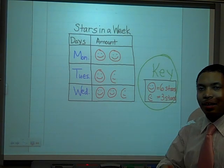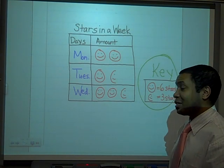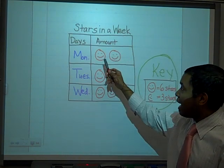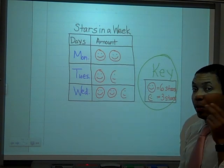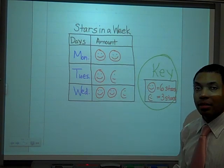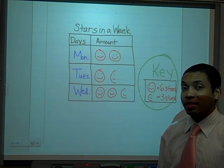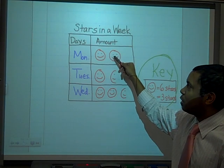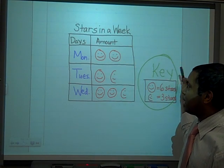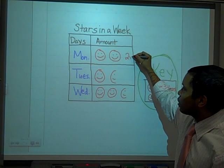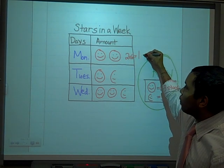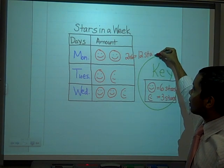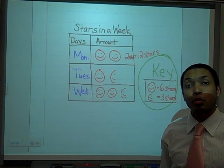Once I have this information, I've unlocked the key and can start to answer questions. Now I know what each picture means. On Monday I have two whole smiley faces. I know one smiley face equals six stars, so let's use multiplication: two times six gives me twelve — twelve stars. On Monday, twelve stars were given.